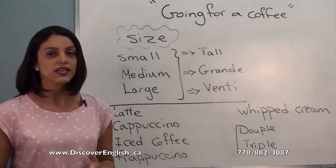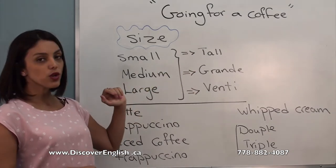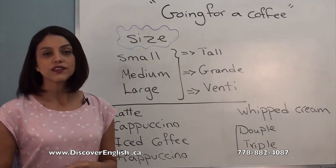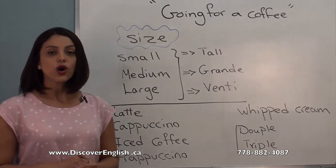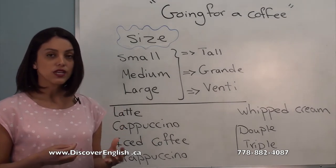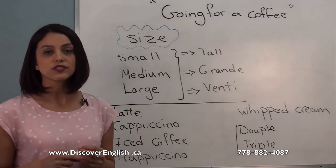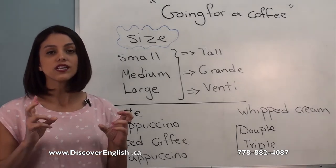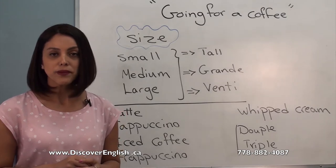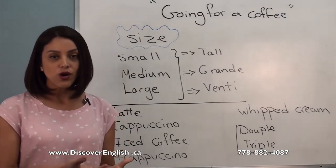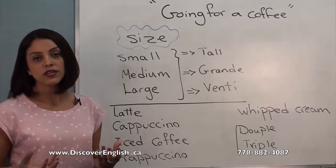'Grande' means medium, and 'venti' means large. Whenever you go to Starbucks or any coffee shop, they'll understand what you're saying. So you can use these terms instead of small, medium, large — you can say tall, grande, venti. Now I want to talk about the different kinds of drinks they have. The good thing about Starbucks is that you can customize the drink you want.